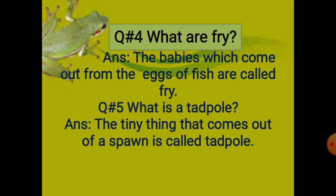Next, you learned about the tadpole. The tiny thing that comes out of a spawn is called a tadpole. What is a tadpole? The tiny thing that comes out of a spawn is called a tadpole.